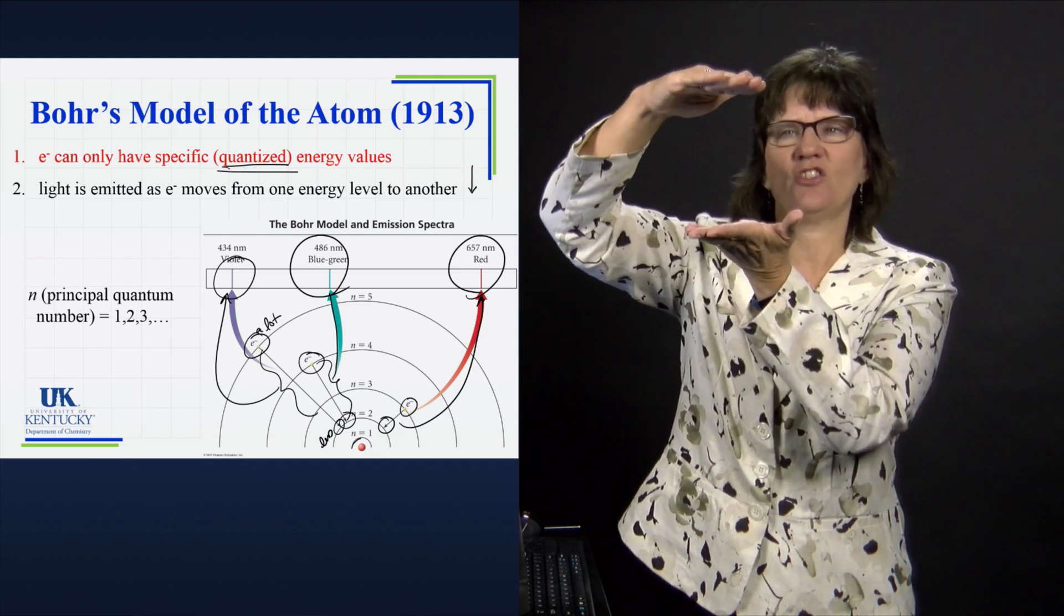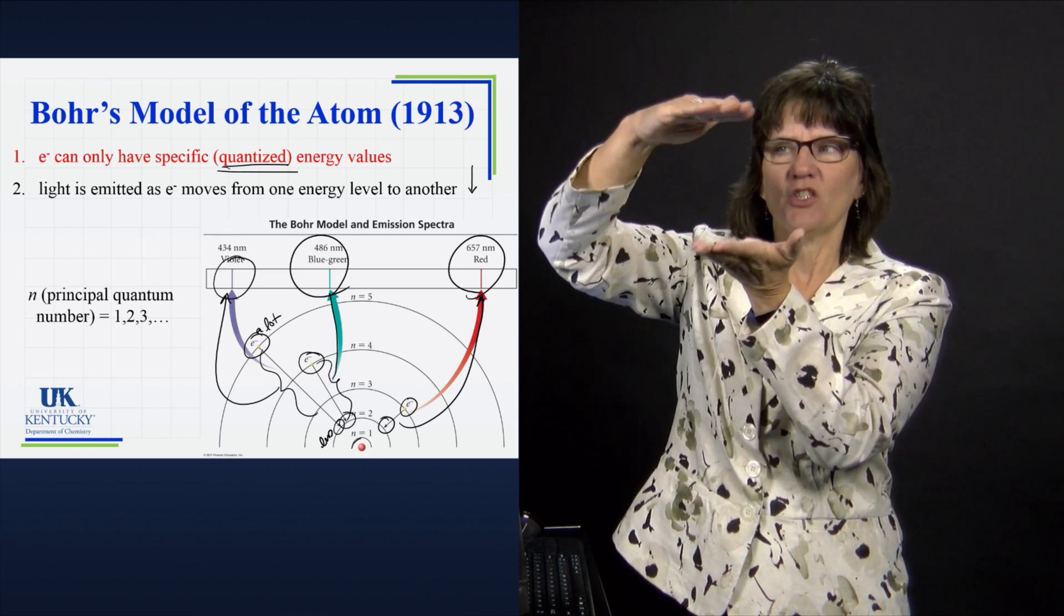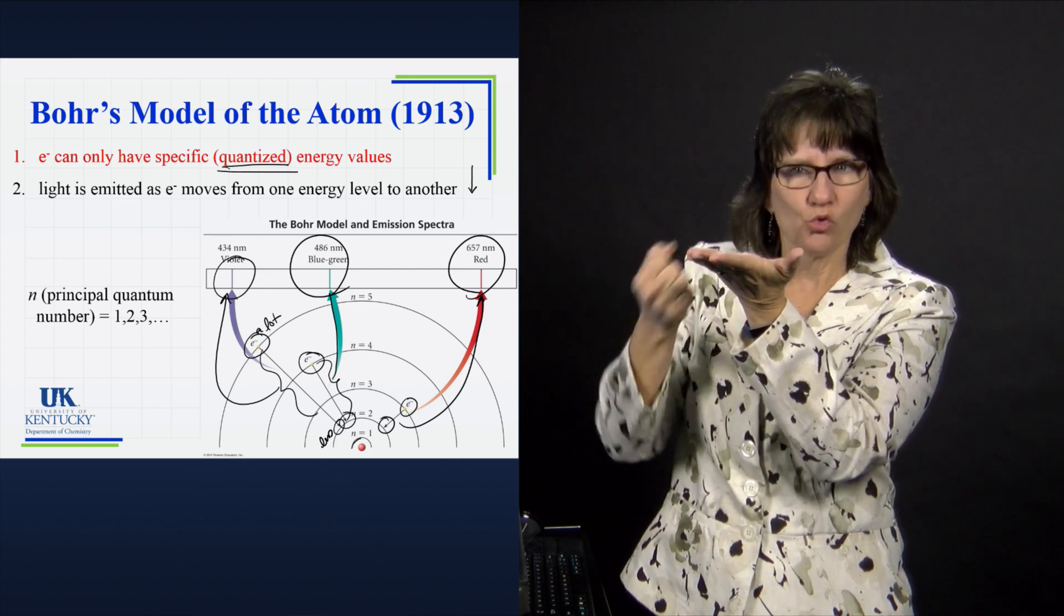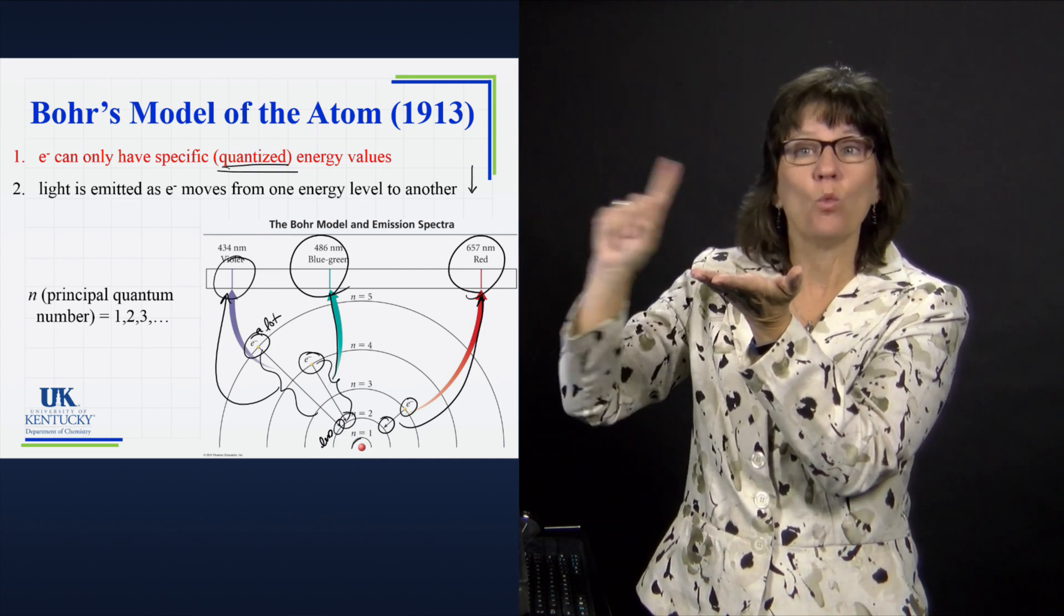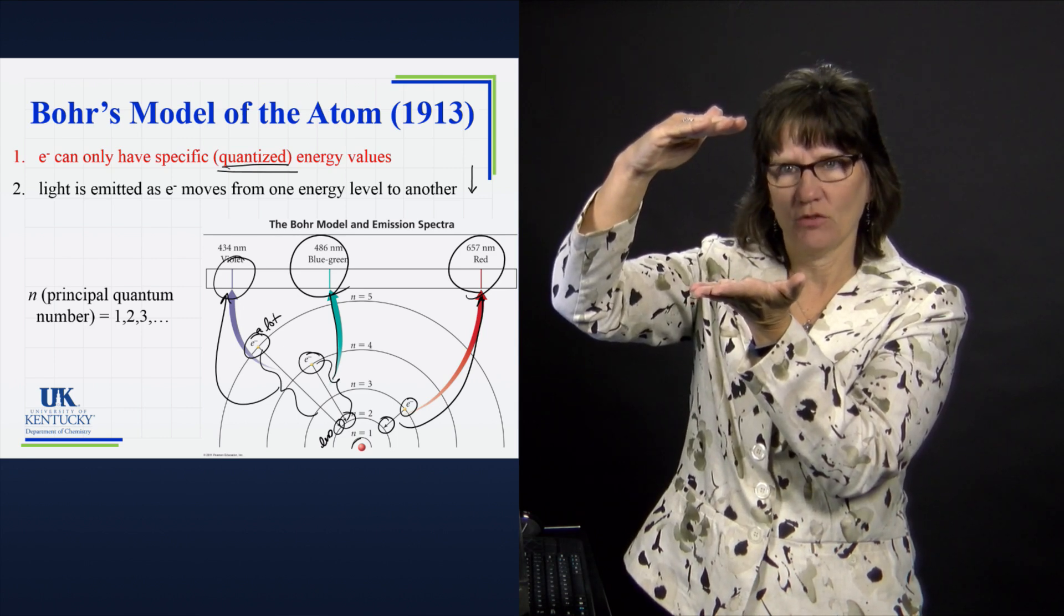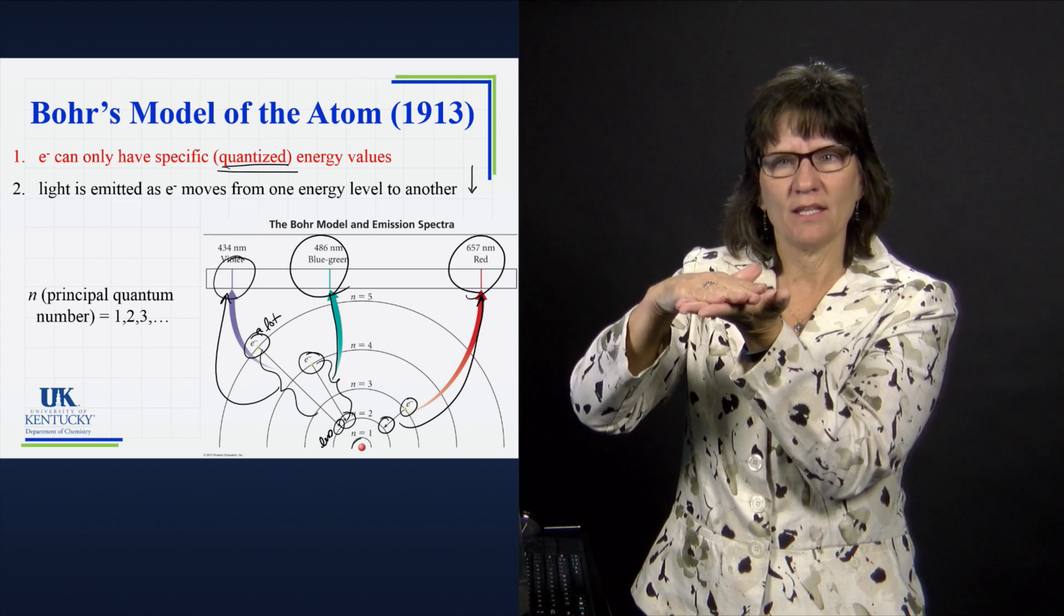So let's say it just does this jump from here to here. He's got to get rid of this much energy. How does he do it? Well, he rolls down the window and he throws out one photon of light equal to the energy difference of that transition. He gets rid of all that energy and suddenly he's here instead.